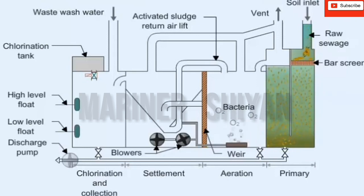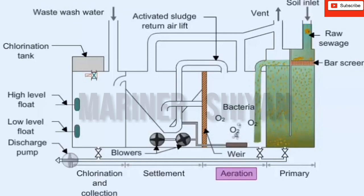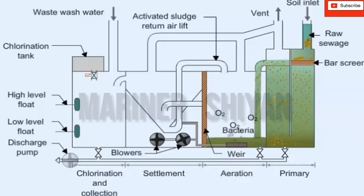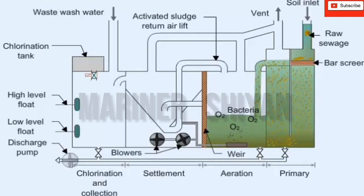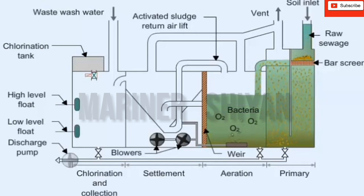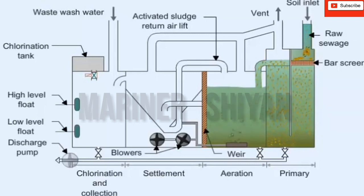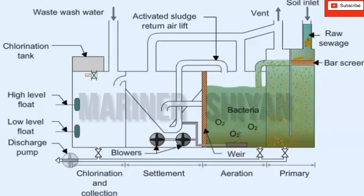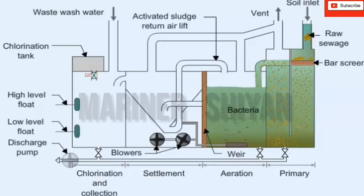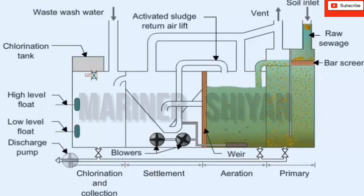Breakdown of the waste in the aeration compartment is induced by bacteriological organisms promoted by the presence of oxygen. The oxygen is supplied by air from the blowers, which enters the aeration section through a fine bubble diffuser at the bottom. The diffuser is of porous material, so clean air is needed to prevent blockage. The bubbles, besides providing oxygen, also create turbulence so that settlement is prevented and good mixing is obtained.